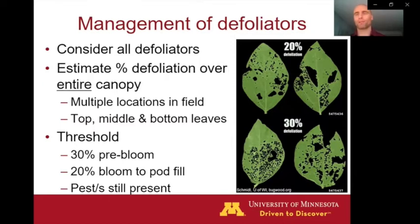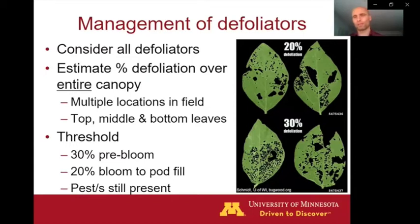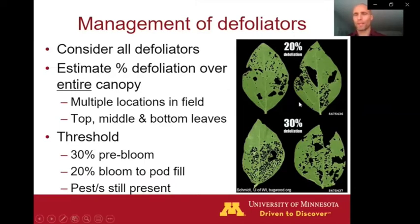For each of those plants that you look at, you want to estimate the defoliation on a leaf from the top, the middle, and the bottom of the plant. Then average those levels of defoliation from each of those locations on a given plant. And then across all those plants that you looked at in the field, that'll give you a pretty solid estimate of the field-wide defoliation. You might want to find some kind of a pictorial guide to help you in training your eye for estimating defoliation.